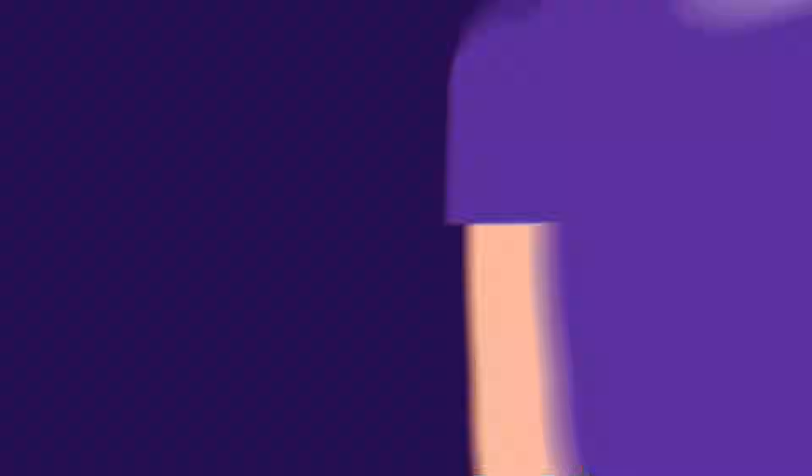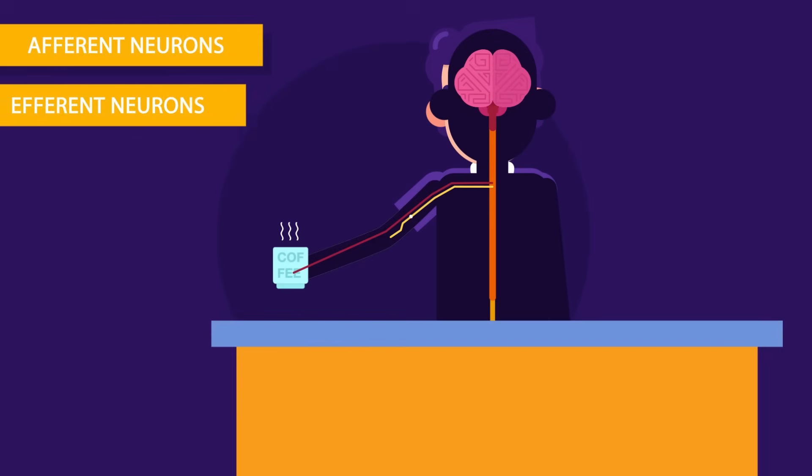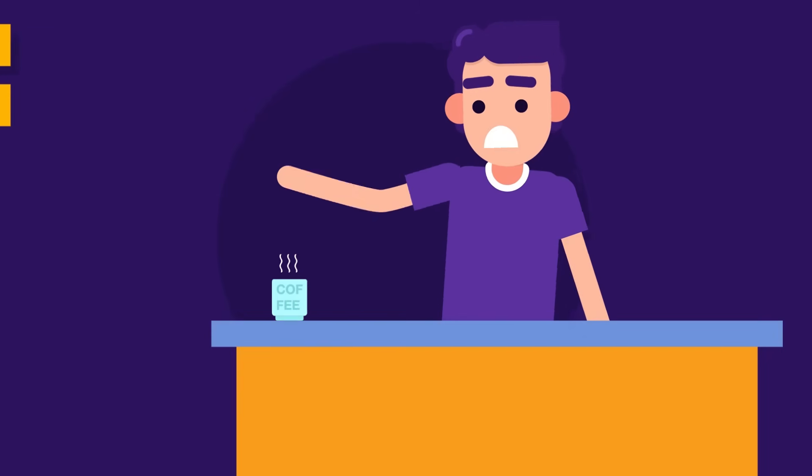Let's see how. When you hold a hot cup of coffee, sensory neurons in your hand transmit signals to brain through sensory neurons, also called afferent neurons, that the cup is hot. Your brain processes that information and sends response through motor neurons, known as efferent neurons, that you must put that cup back.